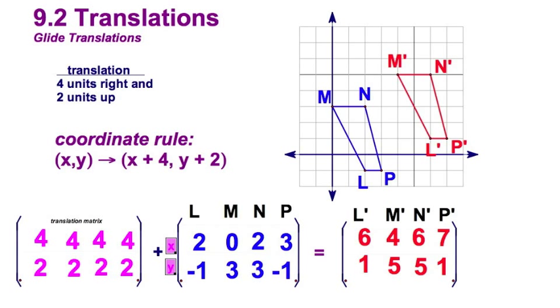In the polygon matrix, the top row is the X, the bottom row is the Y. It's always going to be that way. What you got to watch for here, this is the coordinate rule. When you use matrices, you're going to be adding matrices whenever you are sliding the figure. That polygon or translation matrix, the top row is going to be the same number, the bottom row will be the same number. That's all there is to it.